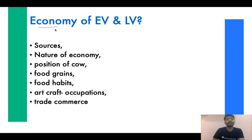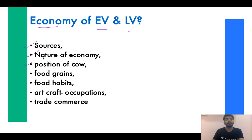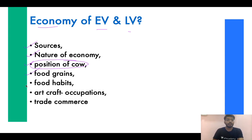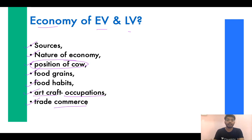Talking about economy — similarly in both Early and Later Vedic periods, we will look at economic sources and what evidence has been found. We will study the nature of economy — when it was pastoral, when nomadic, when it became agricultural, and when trade developed. The position of the cow becomes an important point — what was its position in Later Vedic period and how it transformed from Early Vedic. We will also discuss food grains, food habits, art and craft, and how trade and commerce developed into the Later Vedic period.